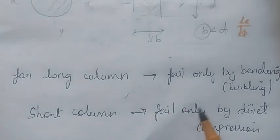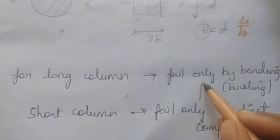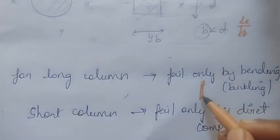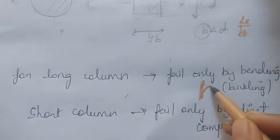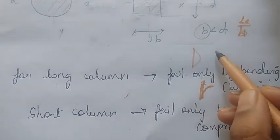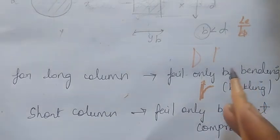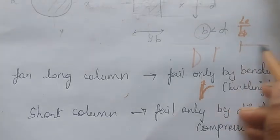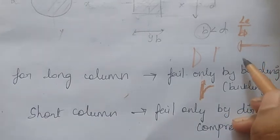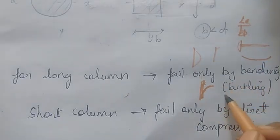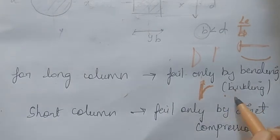For long columns, failure occurs only by bending — the member is longer and will buckle. If you apply a load, the column buckles, meaning its shape changes and it fails. The failure mode is buckling. If there is a column like this, it will buckle. We call these long columns and their failure mode is buckling failure.